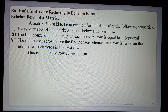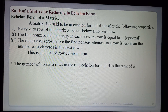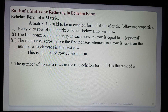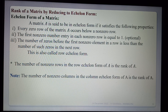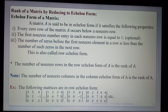This is also called row echelon form. The number of non-zero rows in the row echelon form is the rank of A. Similarly, the number of non-zero columns in the column echelon form of A is the rank. If we convert to column echelon form, the number of non-zero columns is called the rank of the matrix.